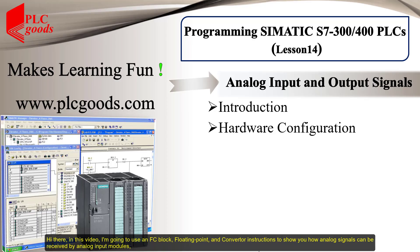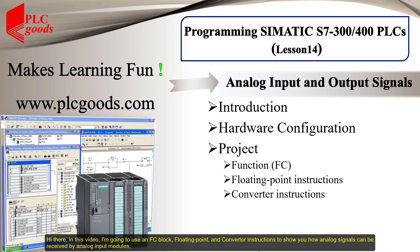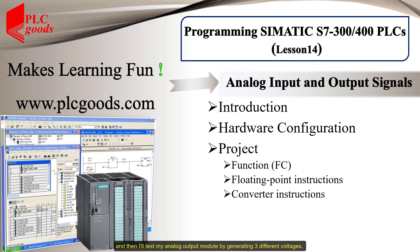In this video I'm going to use FC block, floating point, and converter instructions to show how analog signals can be received by analog input modules, and then I'll test my analog output module by generating three different voltages.